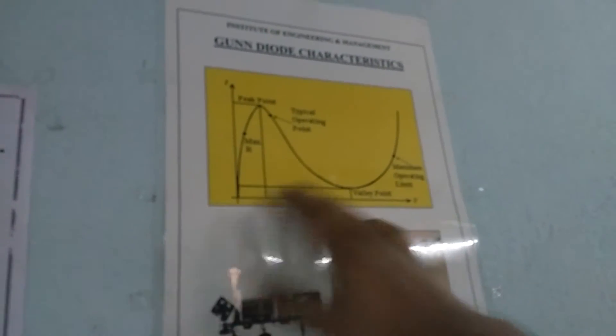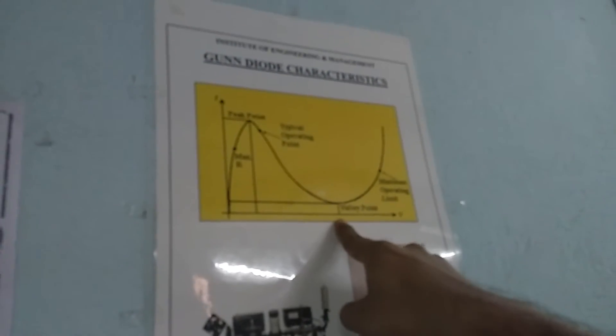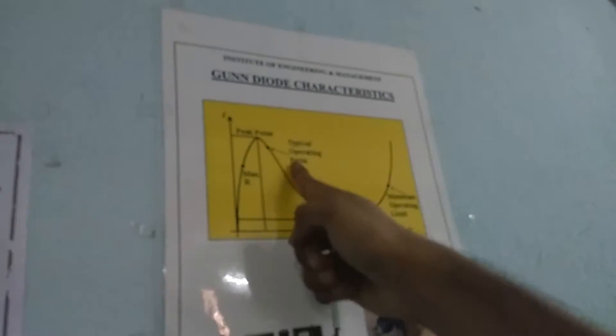Practically we do not have the provision of going up to the valley point. So, we will have the graph up to a point say like this.